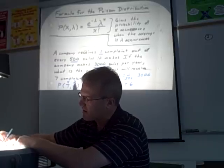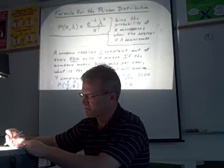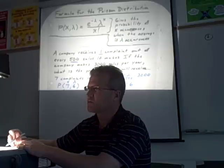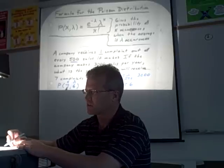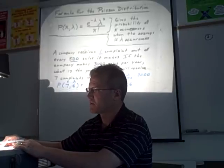So what we're trying to figure out is, if you have 3,000 sales in a year, and the average number of complaints should be six, what's the probability we'll get seven complaints? Pretty tough to figure out without this formula.